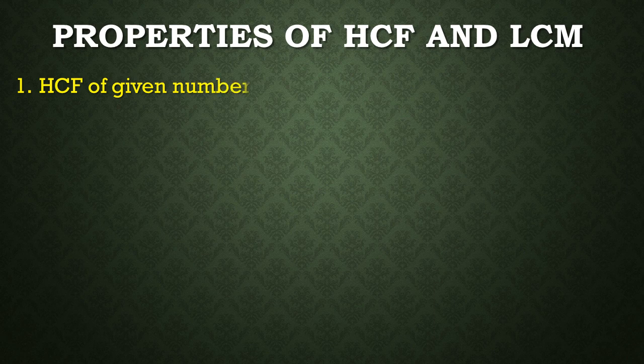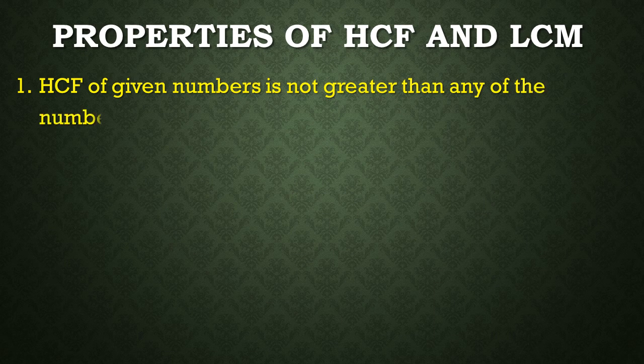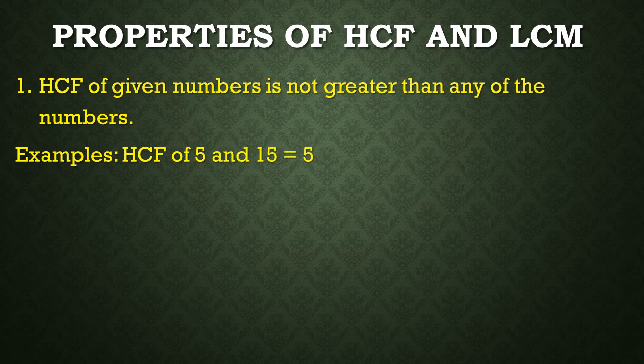First property: HCF of given numbers is not greater than any of the numbers. For example, HCF of 5 and 15 is equal to 5. See, 5 is not greater than 5 and 15. Let us take one more example. HCF of 12 and 18 is equal to 6, and 6 is not greater than 12 and 18.